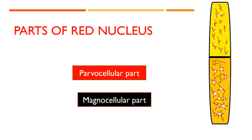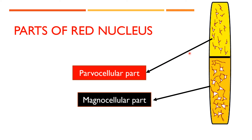There are two parts of the red nucleus: the cranial part and the caudal part. The cranial part is called the parvocellular part, and the caudal part is called the magnocellular part. Large-size multipolar neurons are present in the caudal (magnocellular) part, while small-size multipolar neurons are present in the cranial (parvocellular) part. The parvocellular part is more recent in origin.